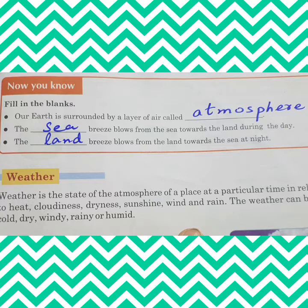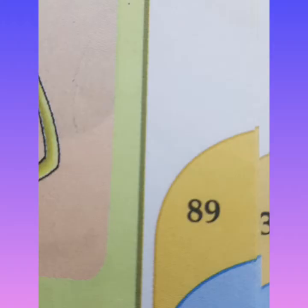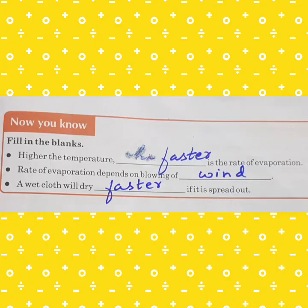Now please move to page number 89. There are also fill-in-the-blanks in the book. Number 4: Higher the temperature, faster is the rate of evaporation. Number 5: Rate of evaporation depends on blowing of wind. Number 6: A wet cloth will dry faster if it is spread out. So fill-in-the-blanks has 6 points in total — write them line by line.